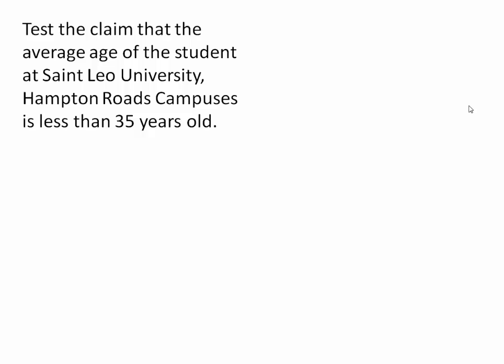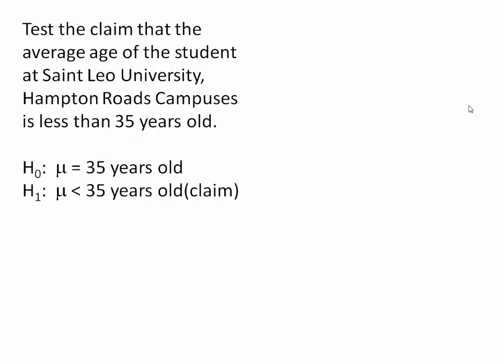For example, we're going to test the claim that the average age of the student at St. Leo University, Hampton Roads campuses, is less than 35 years old. The claim is a statement of strict inequality, so it gives us our alternative hypothesis: the mean is less than 35. We can then write the null hypothesis as a statement of equality, stating that the mean is equal to 35 years old.